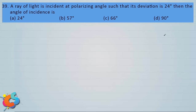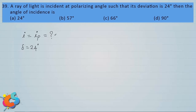The angle of incidence i equals the polarizing angle ip. The deviation delta is given to be 24 degrees. The angle of deviation is the difference between angle of incidence and angle of refraction: delta = i - r. So ip minus r = 24 degrees. Since the ray travels from rarer to denser medium, deviation is i minus r.